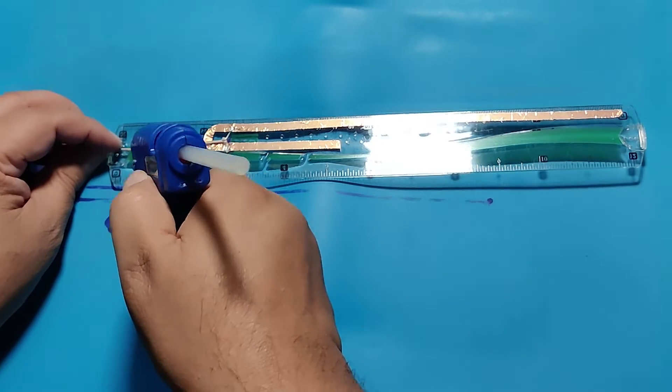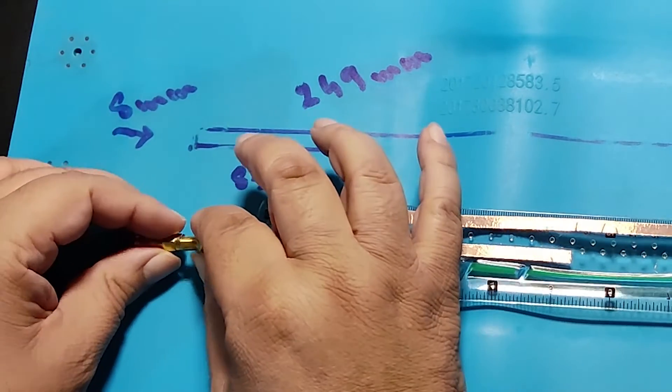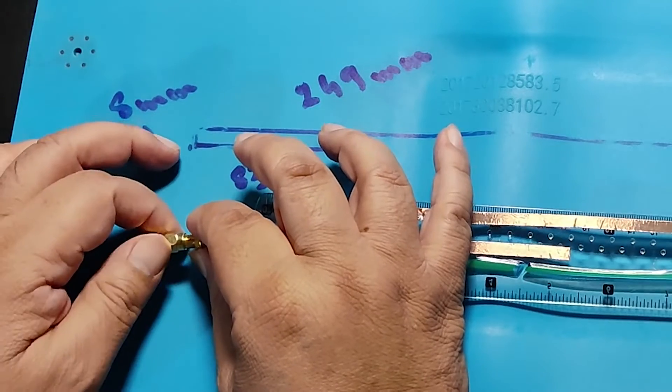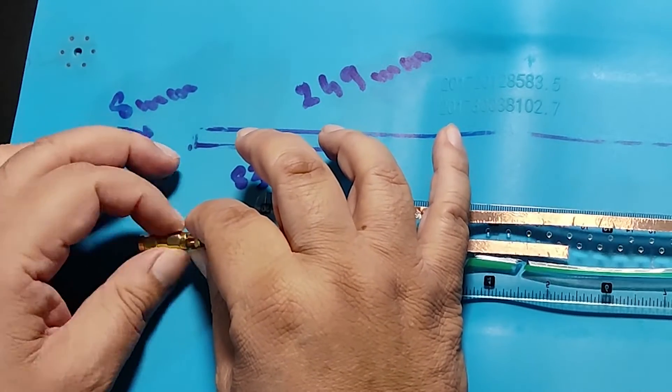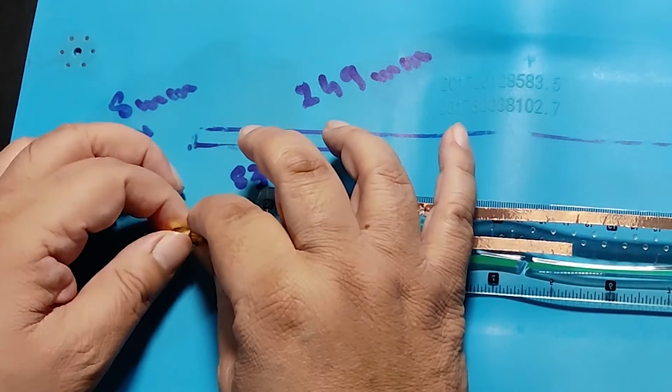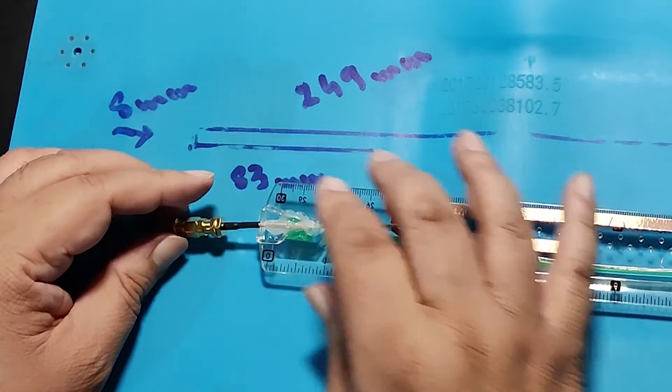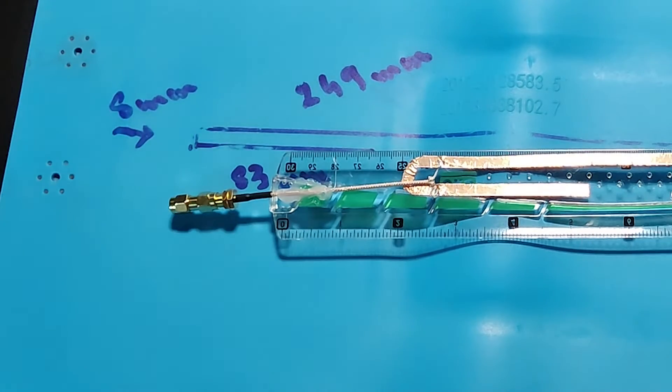SMA connectors are not like SO239, PL259, F connectors, or N connectors. SMA connectors come in 4 genders: male, female, reverse polarity male, and reverse polarity female. So be watchful while selecting a connector.